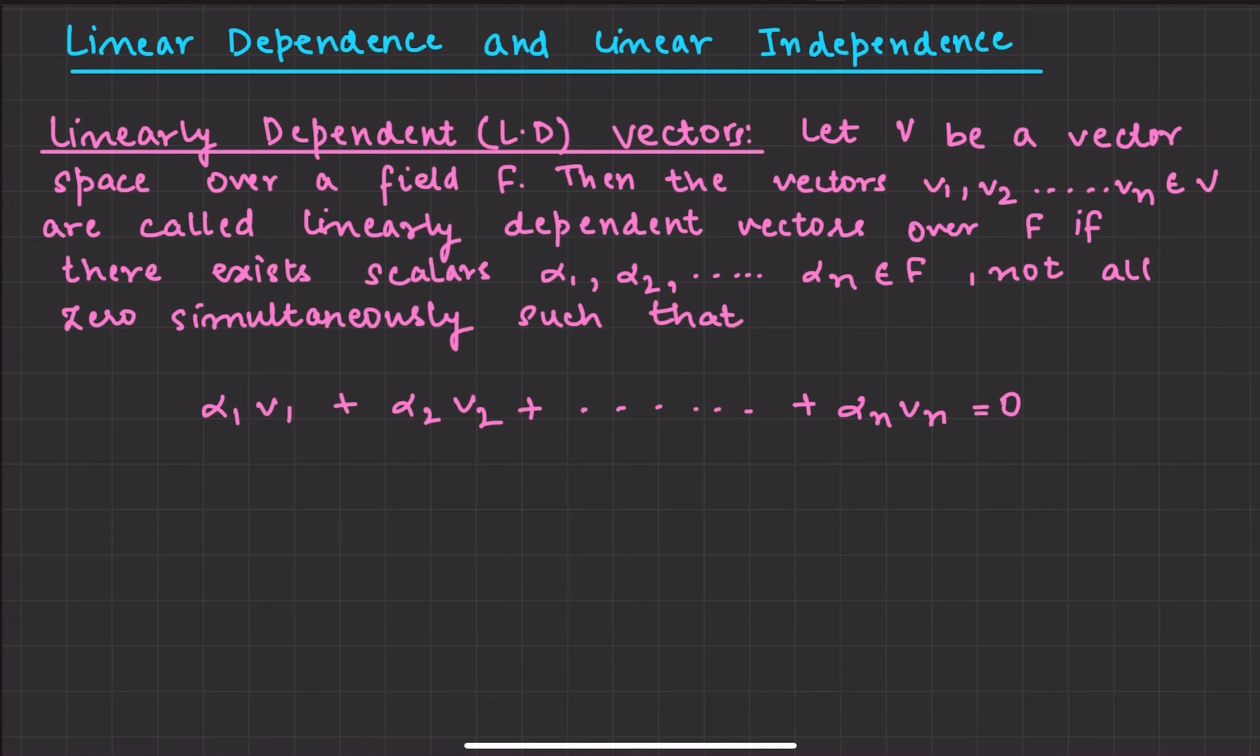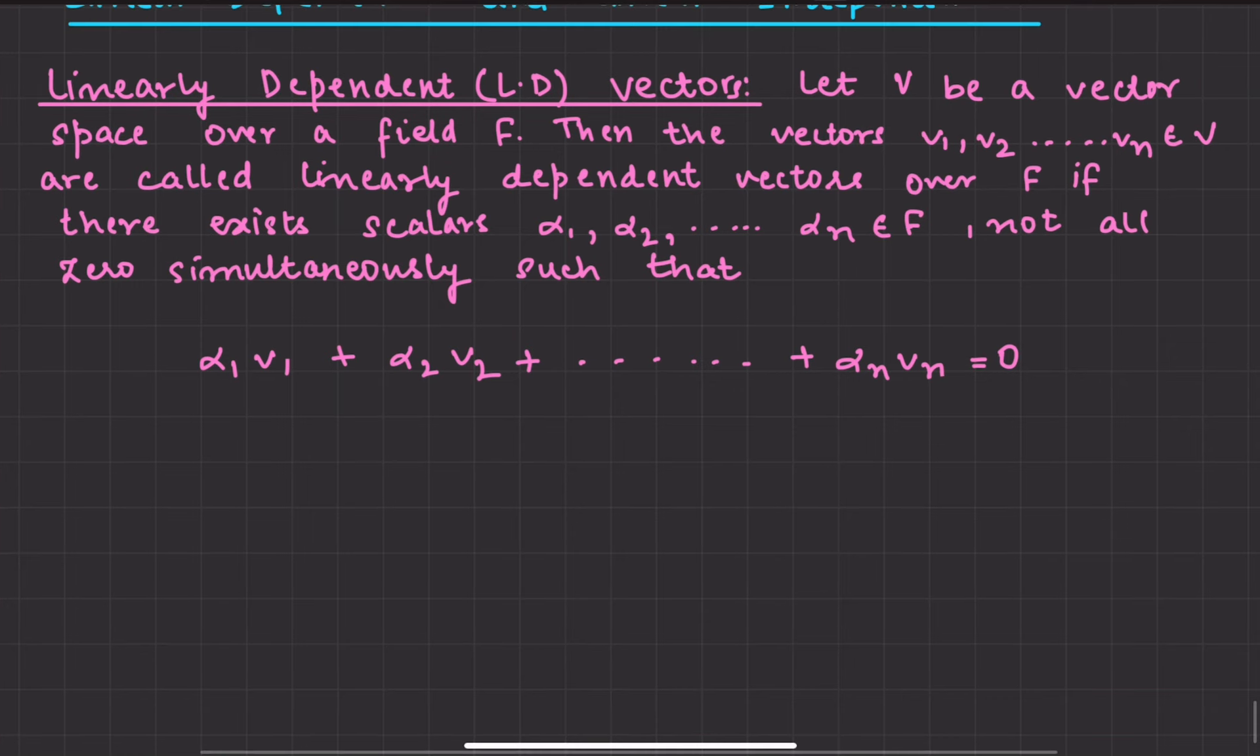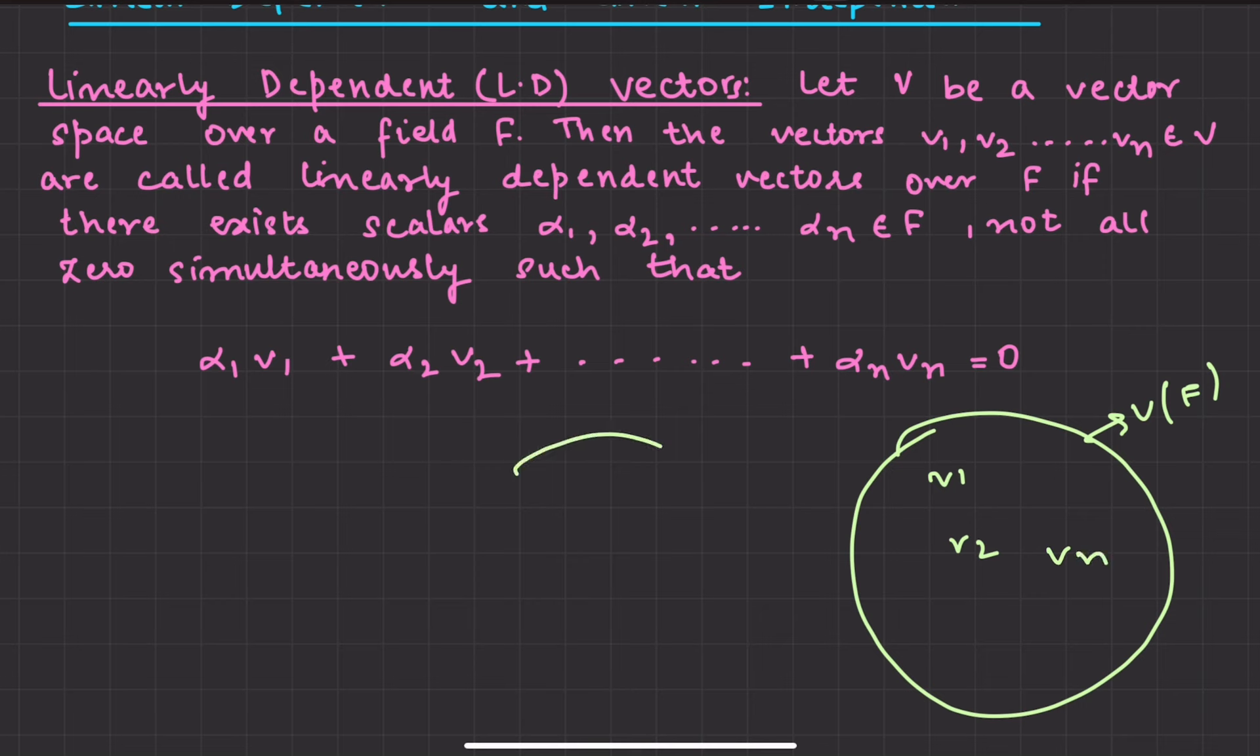Let's start with linearly dependent vectors. If we have a vector space, and here we have some vectors v1, v2, so on to vn. Similarly, this is a field and here we have scalars alpha 1, alpha 2, alpha n.